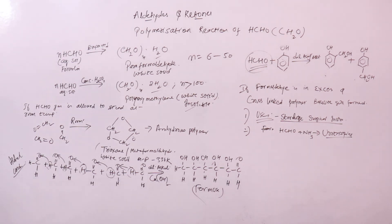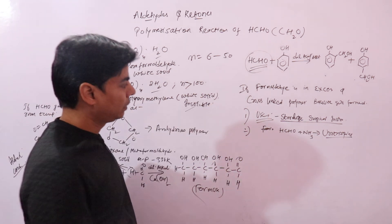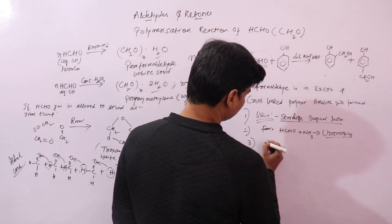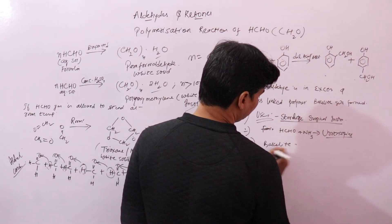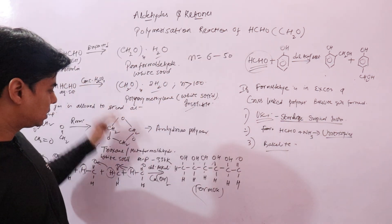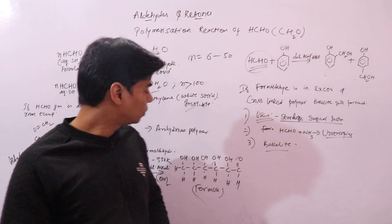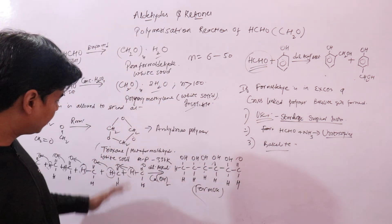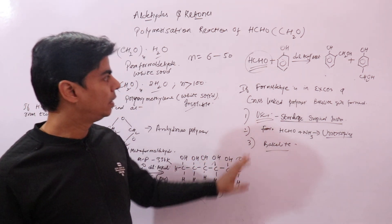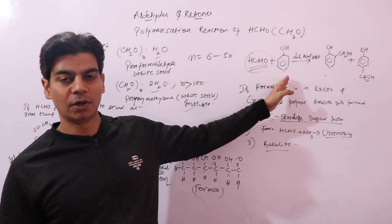Other important uses of formaldehyde include its use in the leather industry for tanning hides, and as we discussed, it is used to make the polymer bakelite. Just remember all these reactions and know the differences between them, especially the aldol condensation given by formaldehyde and the reaction with phenol to form bakelite.